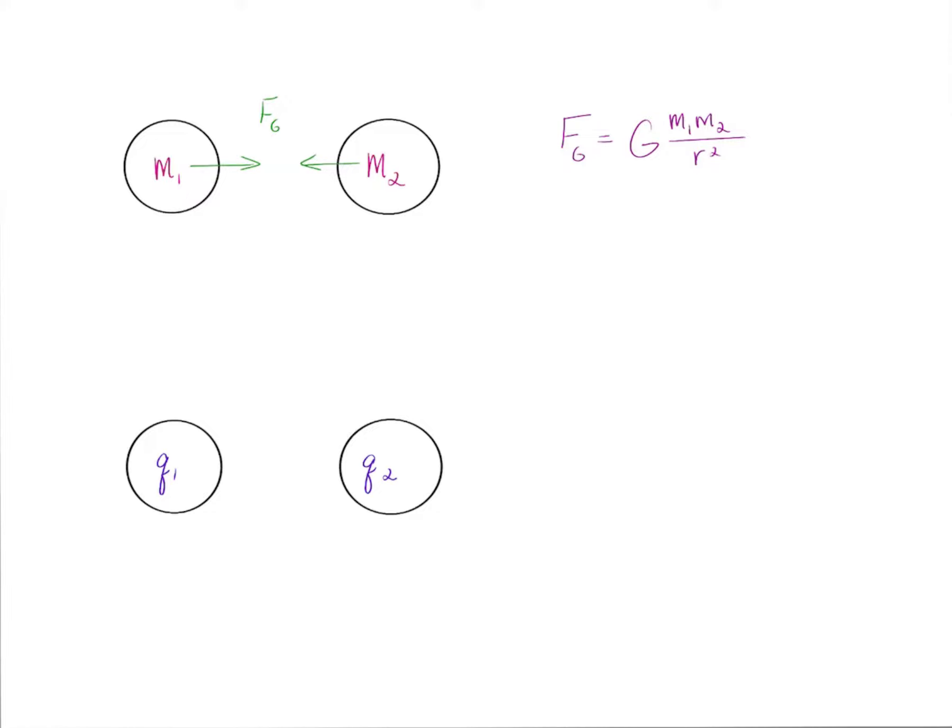So if you want to find that anywhere in the universe, you're going to multiply G, 6.67 times 10 to the negative 11th, that's the gravitational constant, times mass 1 times mass 2 divided by r squared, which is the distance between the center of those masses.